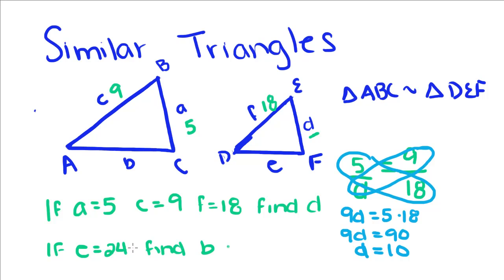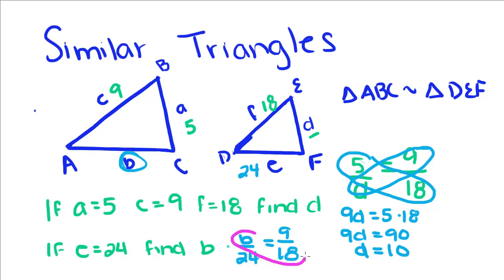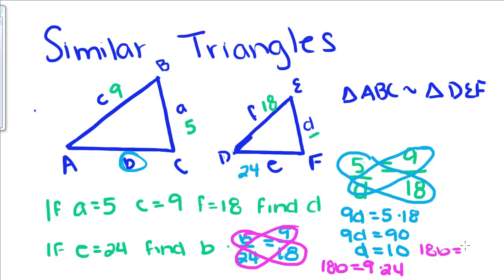So if E is equal to 24, find B. So E is equal to 24, and we want to find side B. So B over 24 is equal to 9 over 18. So then we're going to cross multiply, and we get 18B is equal to 9 times 24. 18B equals 216, divide both sides by 18, and we get B equals 12.